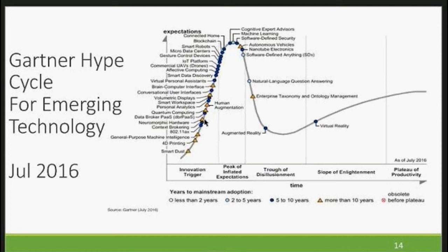This is the Gartner Hype Cycle for emerging technologies. When technologies hit that peak, almost everybody is hearing about them and getting involved — and that's where machine learning right now is. Is it a good thing or a bad thing? It's not a bad thing. It's actually the right thing — it's a maturity curve. 4D printing, for example, is in the innovation trigger area; we're not even comfortable with 3D printing yet.